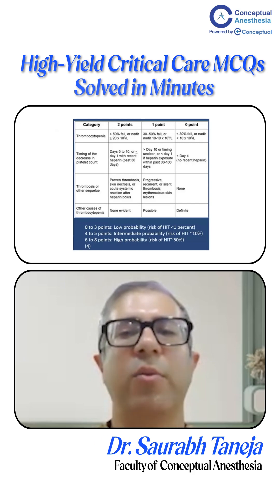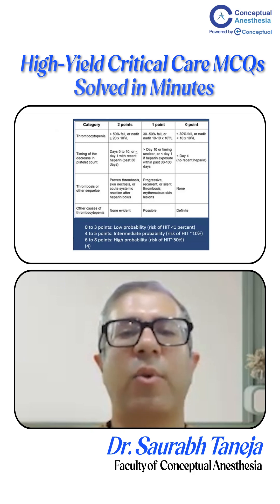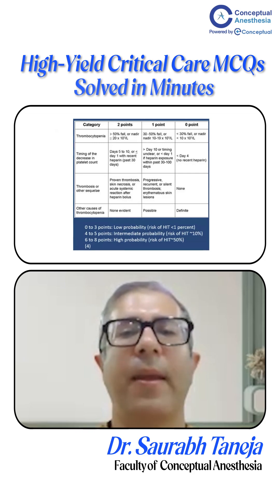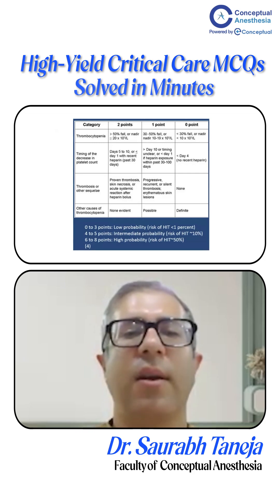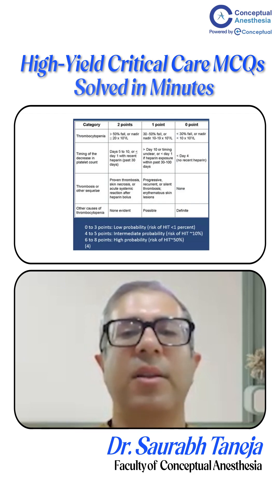The first T is thrombocytopenia. If there is less than a 30% fall in platelets, we give 0 points. A fall of 30 to 50% gets 1 point, and a fall of more than 50% — or a lowest platelet count greater than 20 — gets 2 points. The second T is the timing of the platelet decrease.